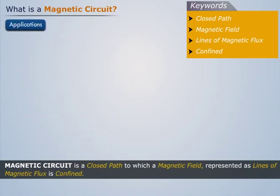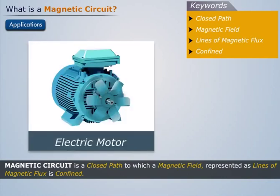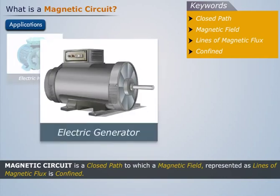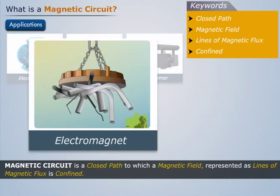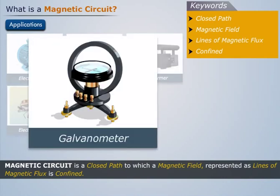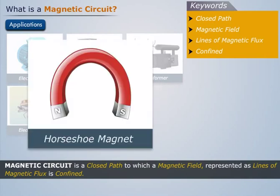They are employed to channel the magnetic fields efficiently in many devices such as electric motor, generator, transformer, lifting electromagnet, galvanometer, and horseshoe magnet.